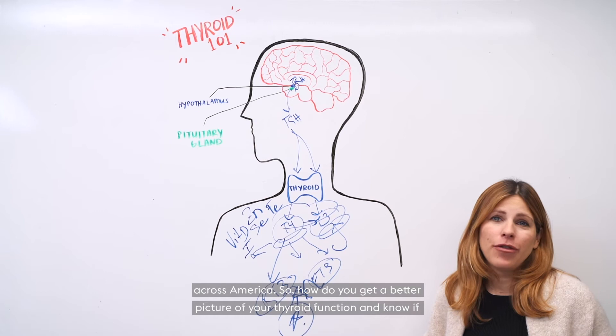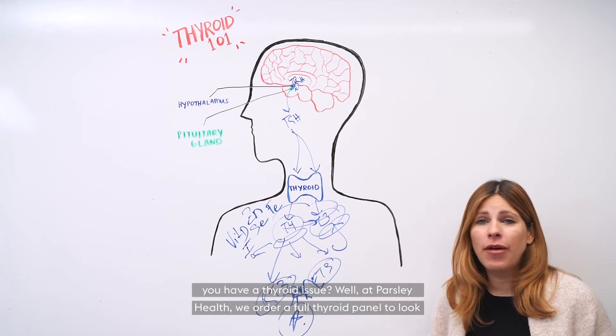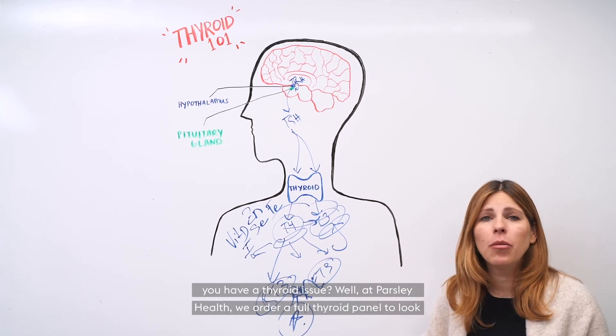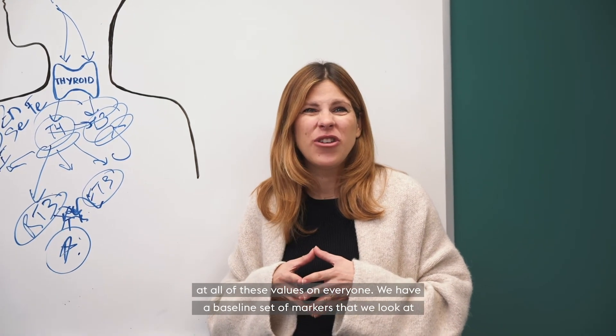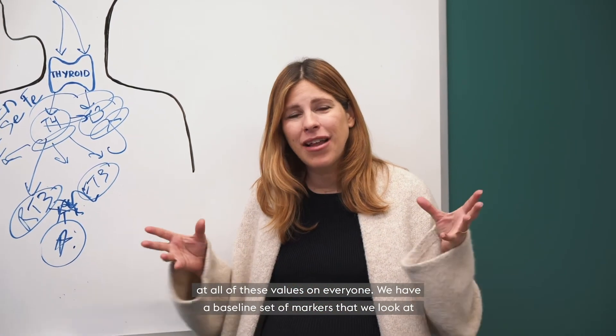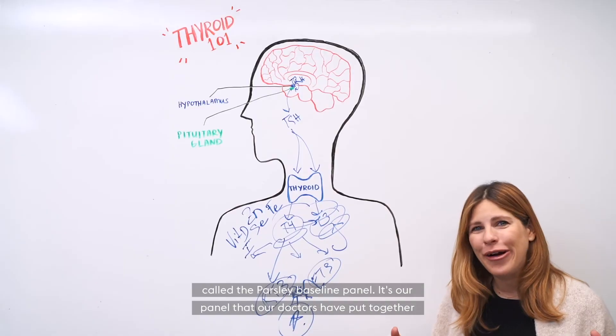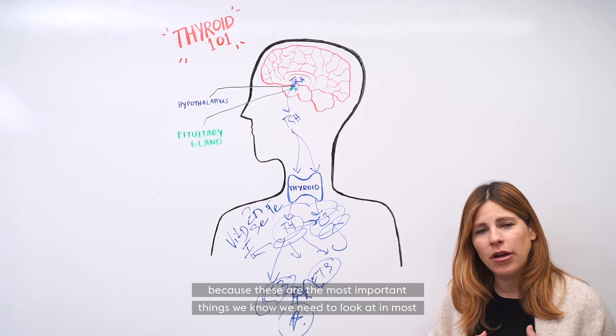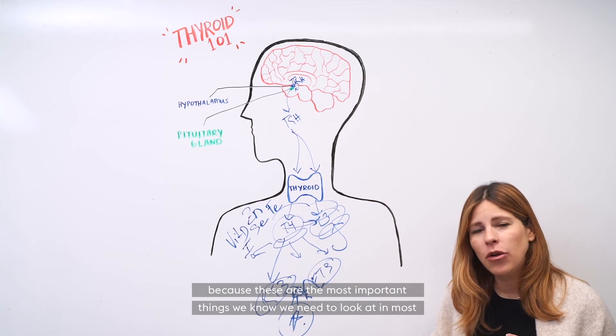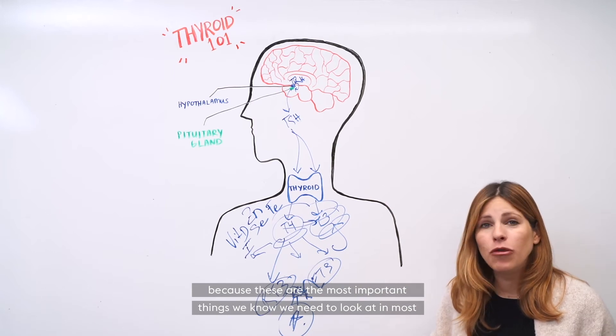So how do you get a better picture of your thyroid function and know if you have a thyroid issue? Well at Parsley Health, we order a full thyroid panel to look at all of these values on everyone. We have a baseline set of markers that we look at called the Parsley baseline panel. It's our panel that our doctors have put together because these are the most important things we need to look at in most people.